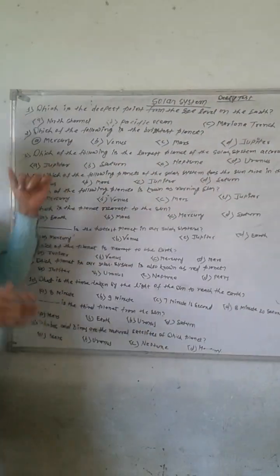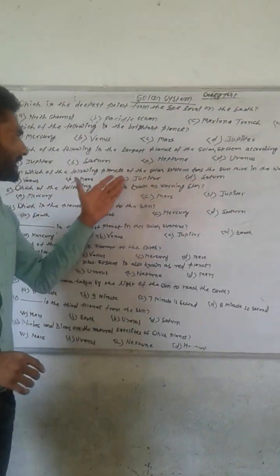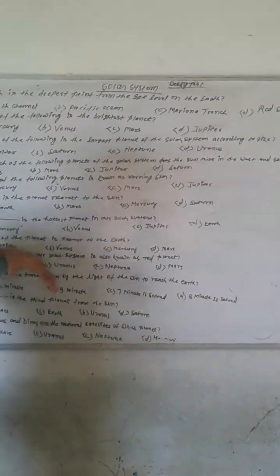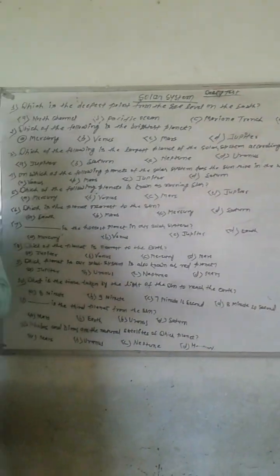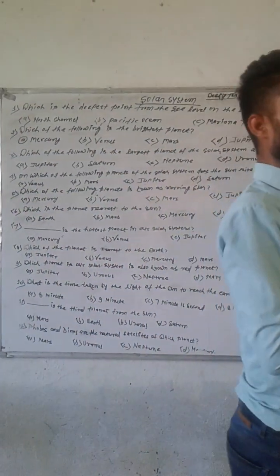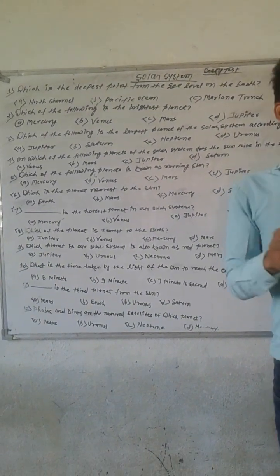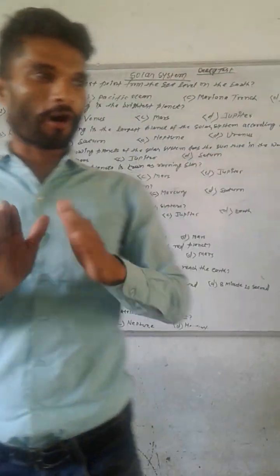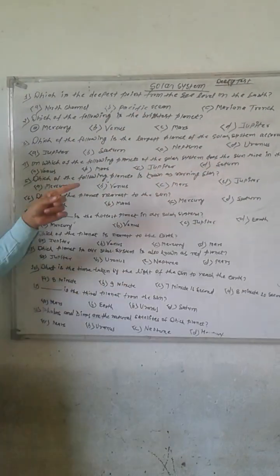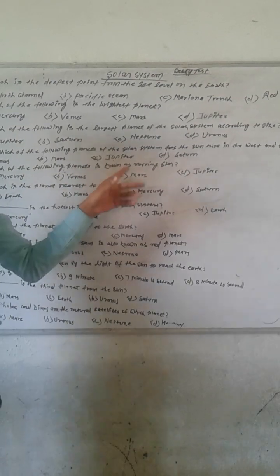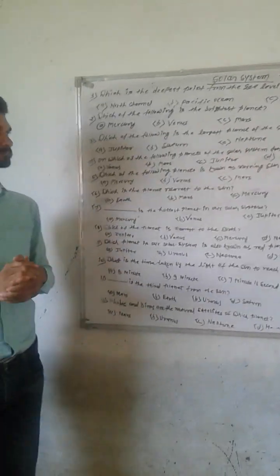The next question is: On which of the following planets of the solar system does the sun rise in the west and set in the east? The next question is: Which of the following planets is known as the morning star?